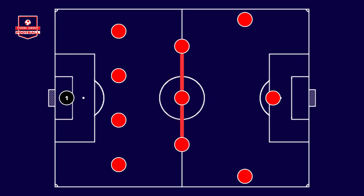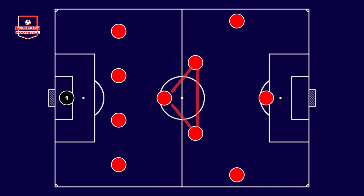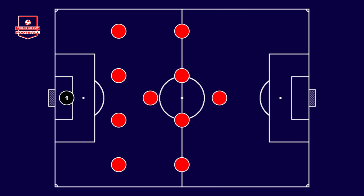Or a 4-3-3 with a flat midfield, obviously with the three players aligned. Nevertheless, the most commonly used configuration is with a midfield triangle and a deeper defensive midfielder — the same system that can transform into a 4-1-4-1 when the team defends.